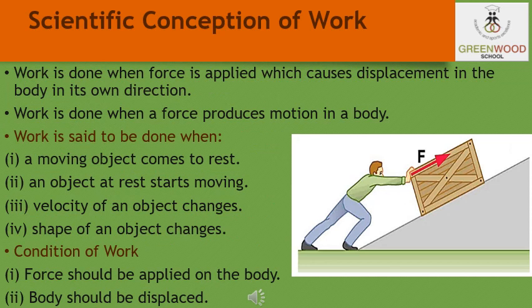So students, let us decide what is work. There is a difference in the way we use the term work in day-to-day life and the way we use it in science. Work is said to be done if, on applying a force on an object, it is displaced from its position in the direction of the force. From a scientific point of view, the following two conditions need to be satisfied for work to be done: a force must be applied on an object, and the object must be displaced.